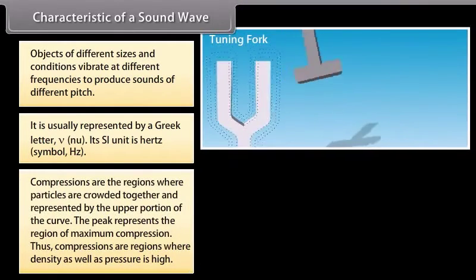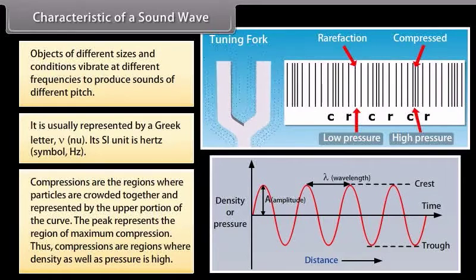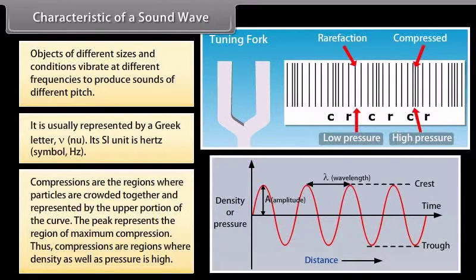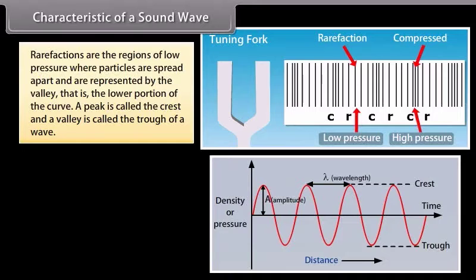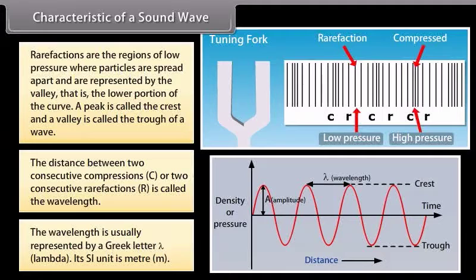We know that compressions are the regions where particles are crowded together and represented by the upper portion of the curve. The peak represents the region of maximum compression. Thus, compressions are regions where density as well as pressure is high. Rarefactions are the regions of low pressure where particles are spread apart and are represented by the valley, that is the lower portion of the curve. A peak is called the crest and a valley is called the trough of a wave. The distance between two consecutive compressions or two consecutive rarefactions is called the wavelength. The wavelength is usually represented by a Greek letter lambda. Its SI unit is meter.